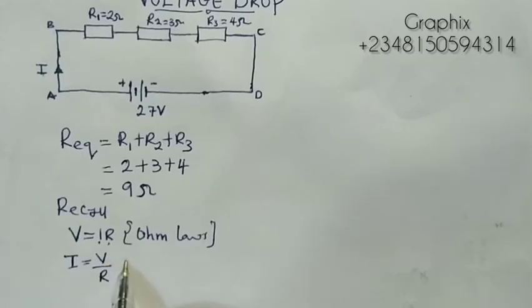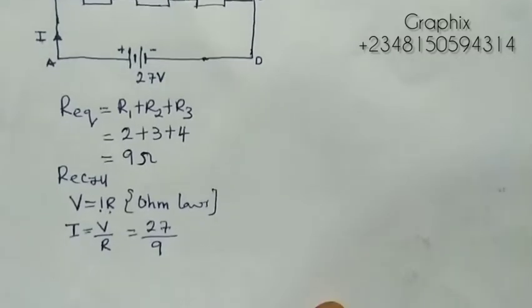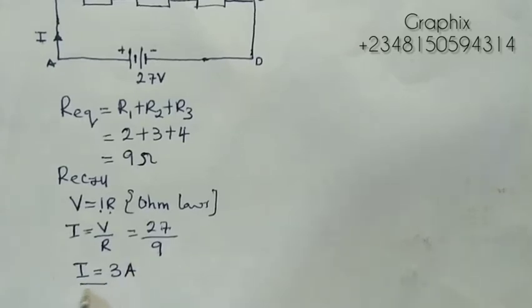This V here is my V total, which is given as 27. And my R here is my R total, which is 9. So I can easily say that my I equals 27 divided by 9, and that will be 3. The unit for current is ampere. So that is current I equals 3A.